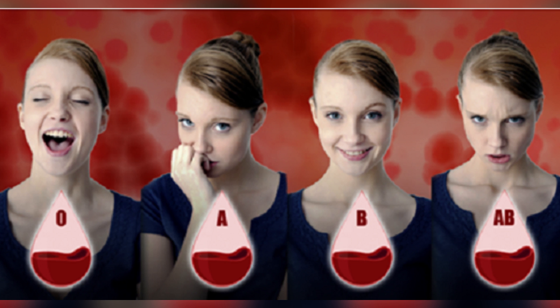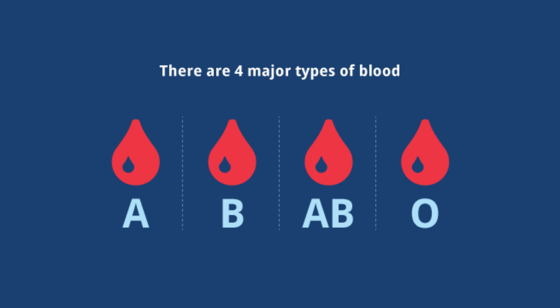Blood type and nutrition. During the entire day, a chemical reaction happens in our bodies, so the blood type is very important when it comes to digestion or weight loss. People with different types of blood should consume different kinds of food. For instance, those who have blood type O should consume high protein nutrition such as meat and fish.